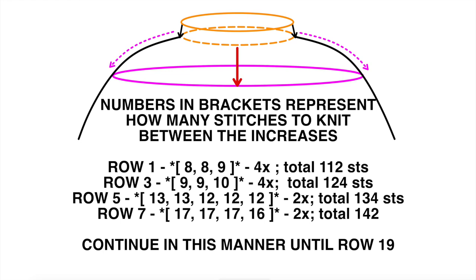In row 5, I want to increase by 10 stitches. 10 stitches would be nicely distributed after 13 stitches, then after 13, then 12, 12, and 12 — repeated 2 times. That gives me a 10-stitch increase and I end up with 134 stitches.